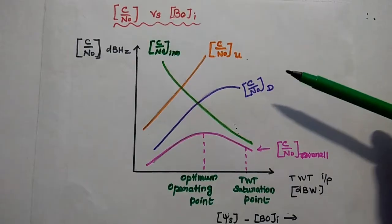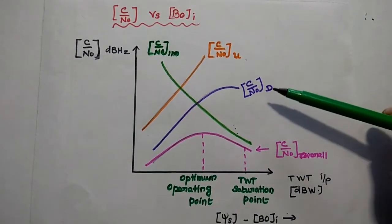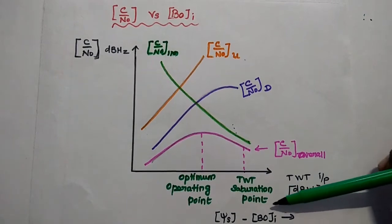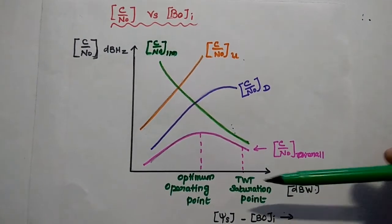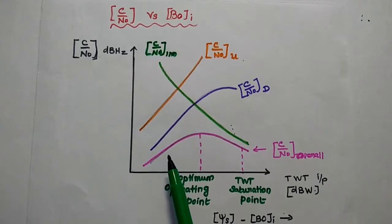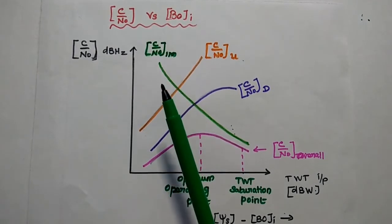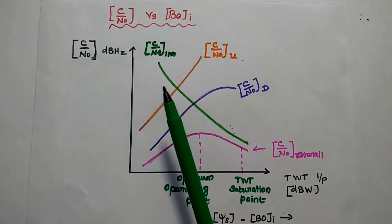This is the diagrammatic representation of carrier to noise density ratio as a function of back-off. Here it is in minus sign. Whenever the input back-off is increased, the intermodulation carrier to noise density is also getting increased.